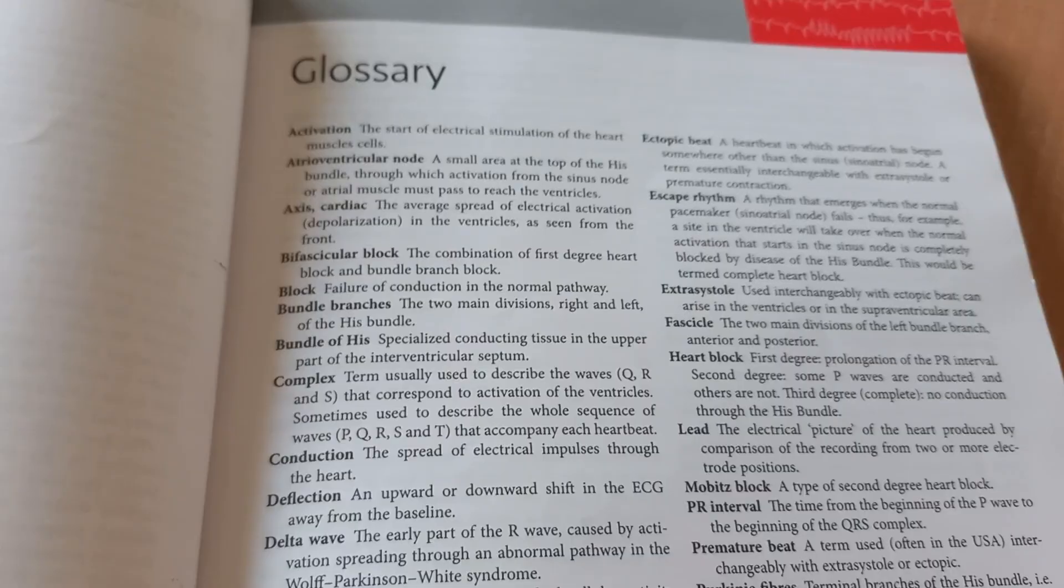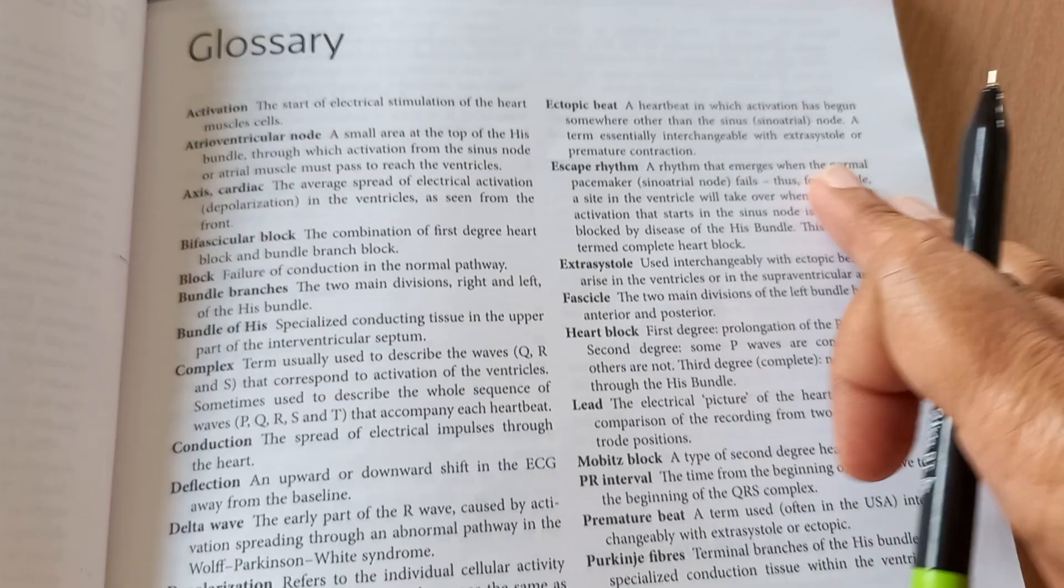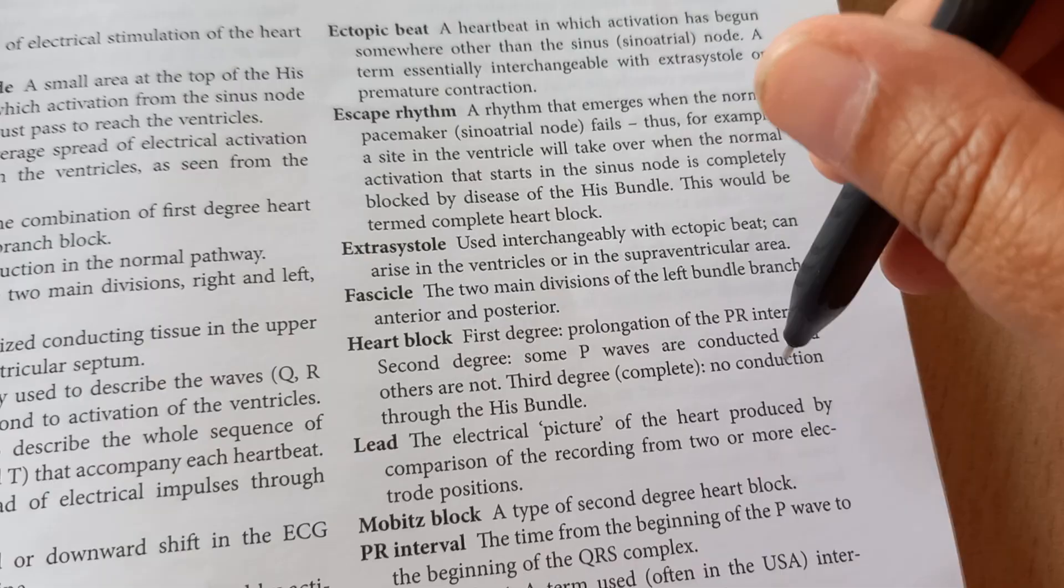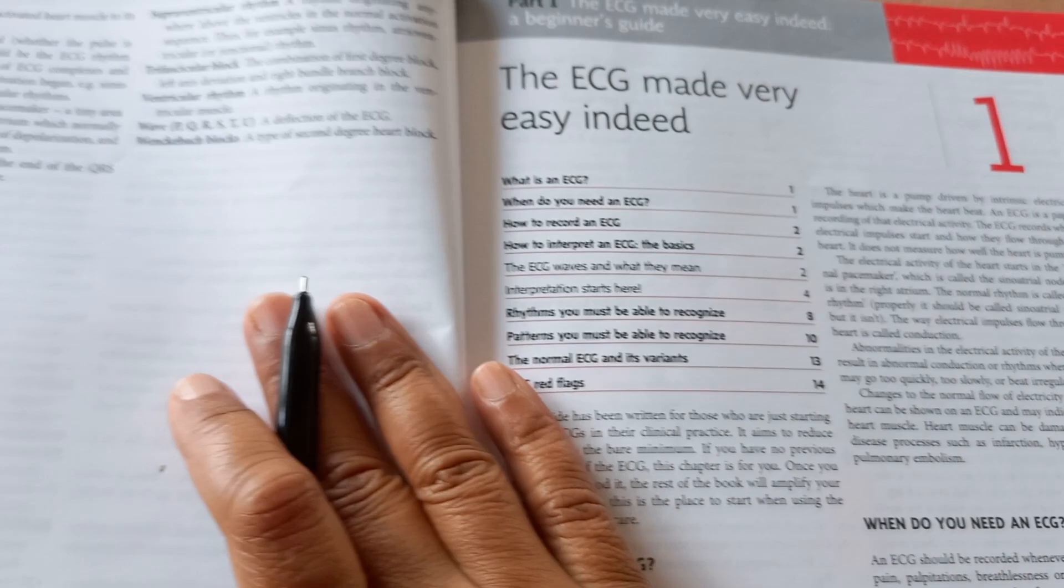In the beginning of this book itself, they have given the glossary, unlike other books which have it at the end. So what do you mean by a heart block first degree? Prolongation of the PR interval. Second degree: some P waves are conducted and others are not. Third degree: no conduction through the His bundle, the bundle of His. Some things they have given here.